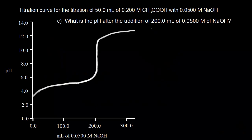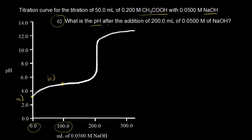We've been looking at the titration curve for the titration of a weak acid, acetic acid, with a strong base, sodium hydroxide. In part A we found the pH before we'd added any base, and in part B we found the pH after adding 100 milliliters of base. In part C, our goal is to find the pH after the addition of 200 mL of 0.05 molar sodium hydroxide.